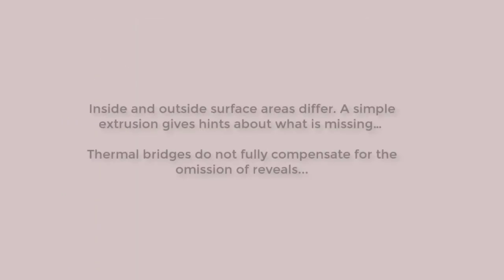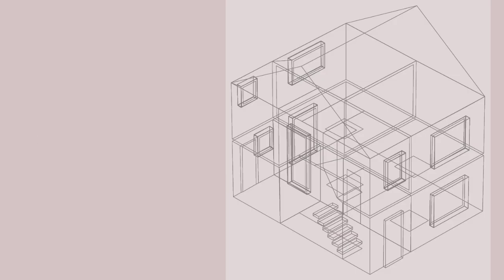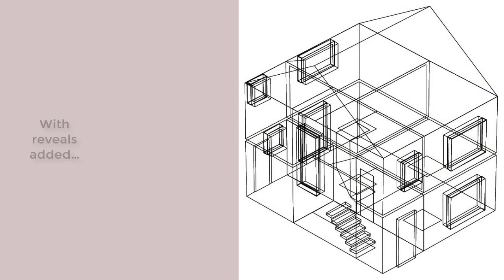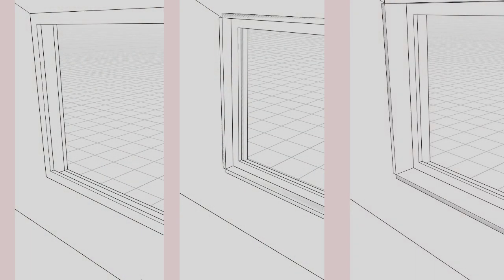One key point is that the outside surface area differs from the inside, and a simple extrusion of the polygon fails to capture this. The second point is that inclusions of thermal bridges do not fully compensate for the missing surface area of the reveals. To illustrate the impact of reveal decisions, let's have three variants: one with flush frames, one with a 100mm internal reveal, and one with a 200mm reveal.